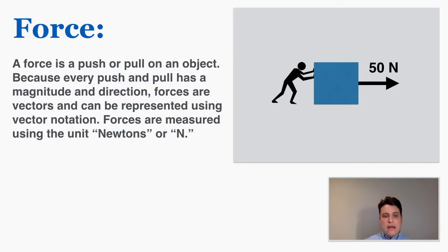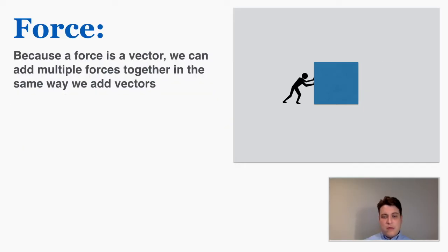Because a force is a vector, we can add multiple vectors together in the same way we add regular vectors. If you're pushing on this box with 100 Newtons and I'm pushing back with 80 Newtons, the sum of all forces acting on an object is called the net force on the object.